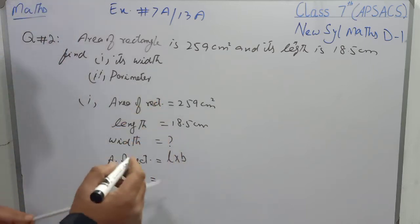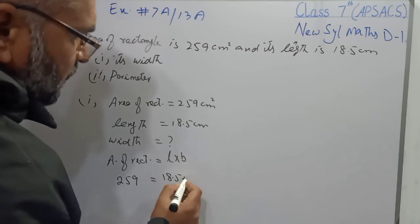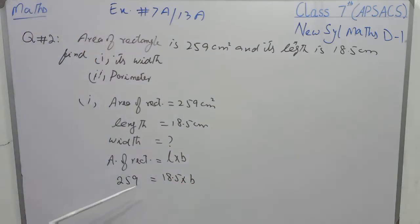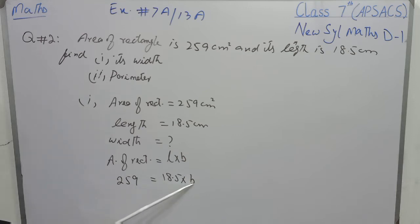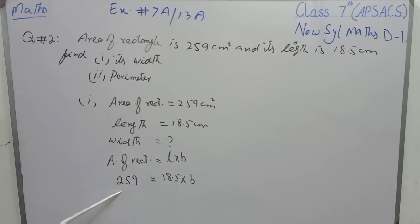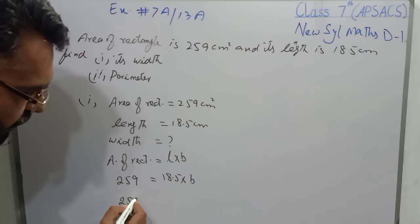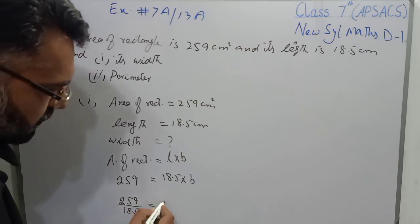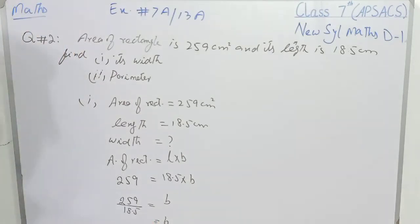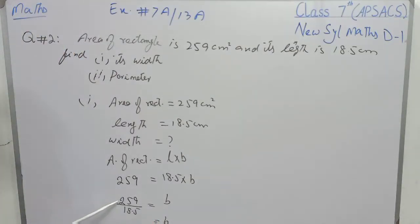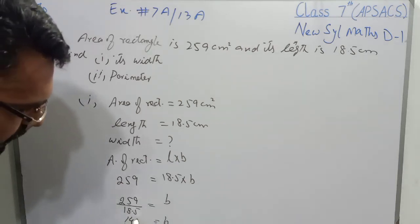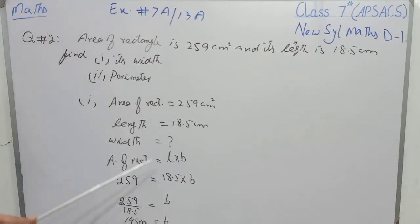259 is equal to length 18.5 cm multiplied by width B, which we have to find. 18.5 is multiplied with B and we have to find the value of B. This number is transferred to the other side where it will divide, written as 259 over 18.5 is equal to B. Use your calculator to find 259 over 18.5 and you will have 14 cm — that is its breadth.